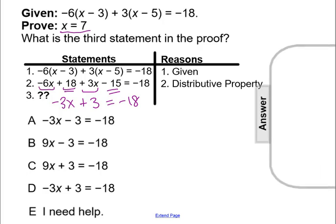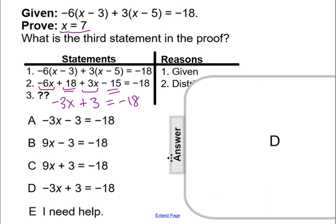making our answer choice D: negative 3x plus 3 equals negative 18.